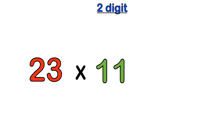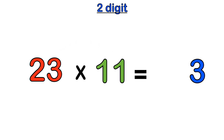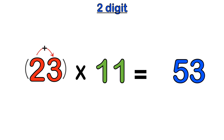It gets more interesting when we have two or more digits. For example, 23 times 11. We start with the last digit of our two-digit number — that's three — and multiply it by the last one in 11. Three times one gives us three, and we put that in the answer line. Then we move to the left and add the two numbers: two plus three gives us five, and we put that in the answer line.